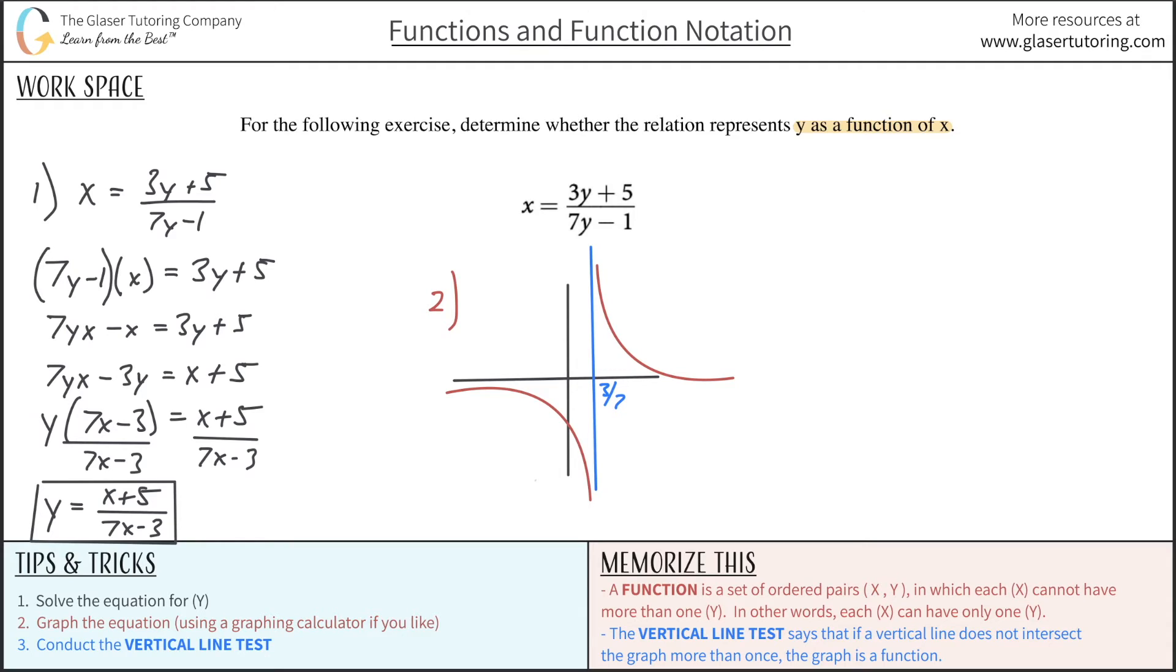Now, next thing is I'm going to conduct my vertical line test. So what I just drew there is not the vertical line test yet. I just drew a vertical line, and that vertical line happens to not intersect the graph at any location. That's not a big deal at all. But the vertical line test says that if a vertical line does not intersect the graph more than once, meaning it can intersect at 0 times or could intersect at 1 time, if it intersects at 0 or 1, the graph is indeed a function.